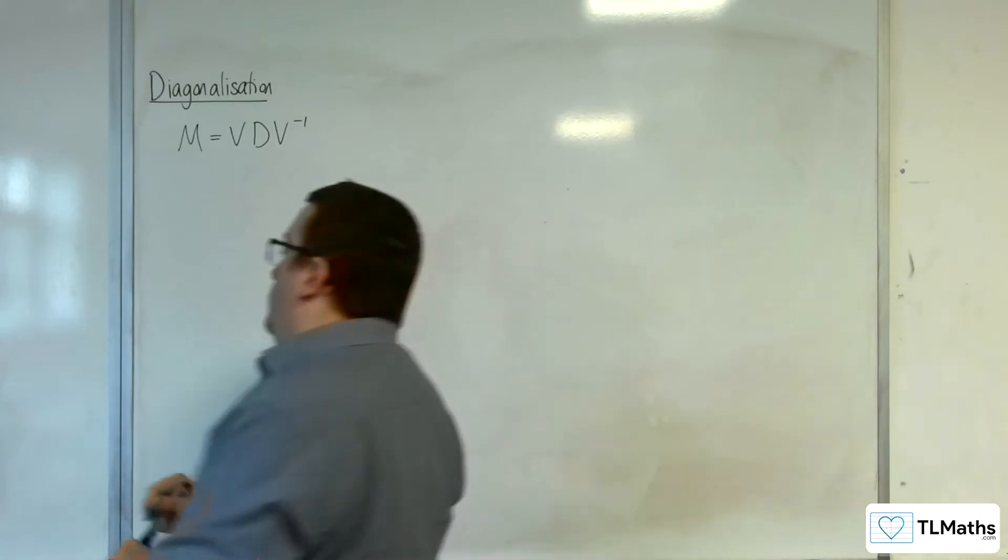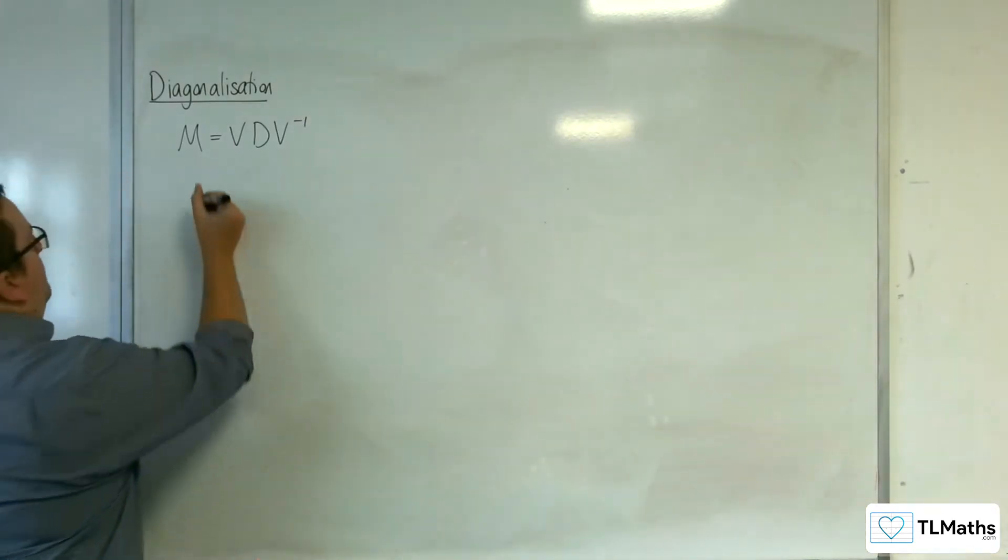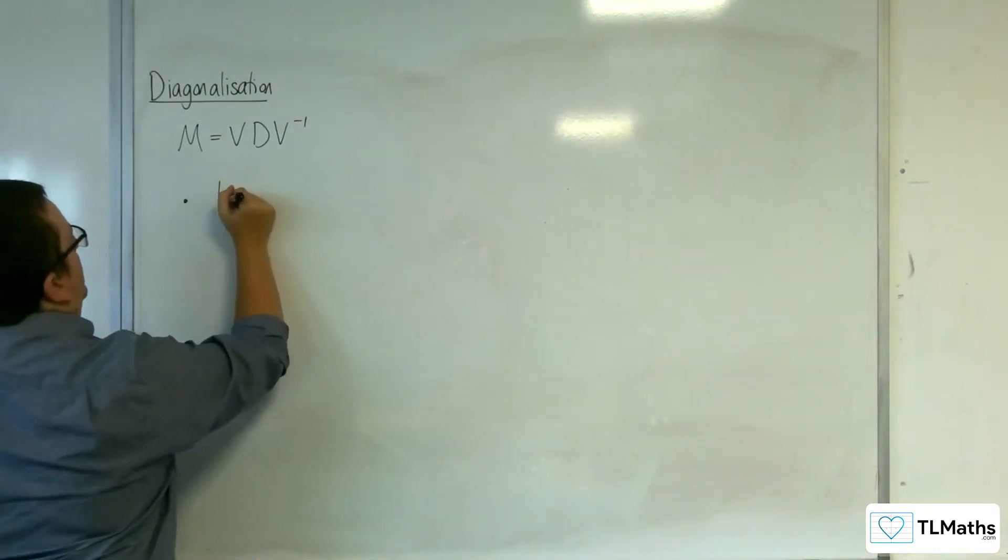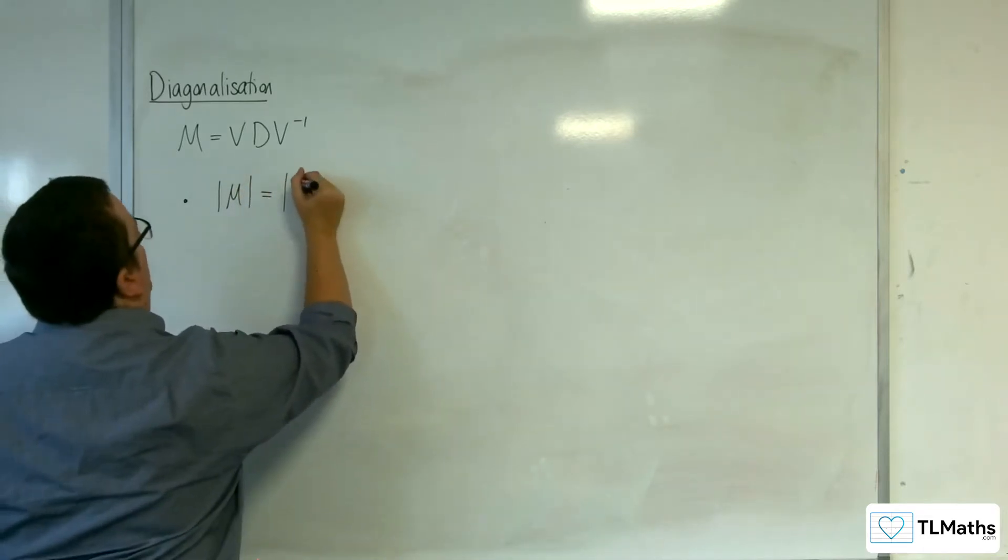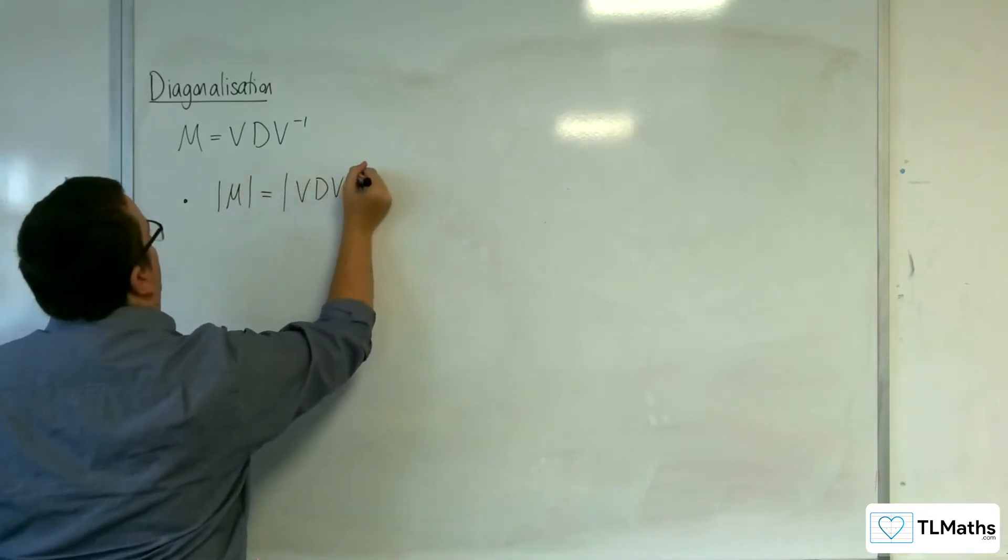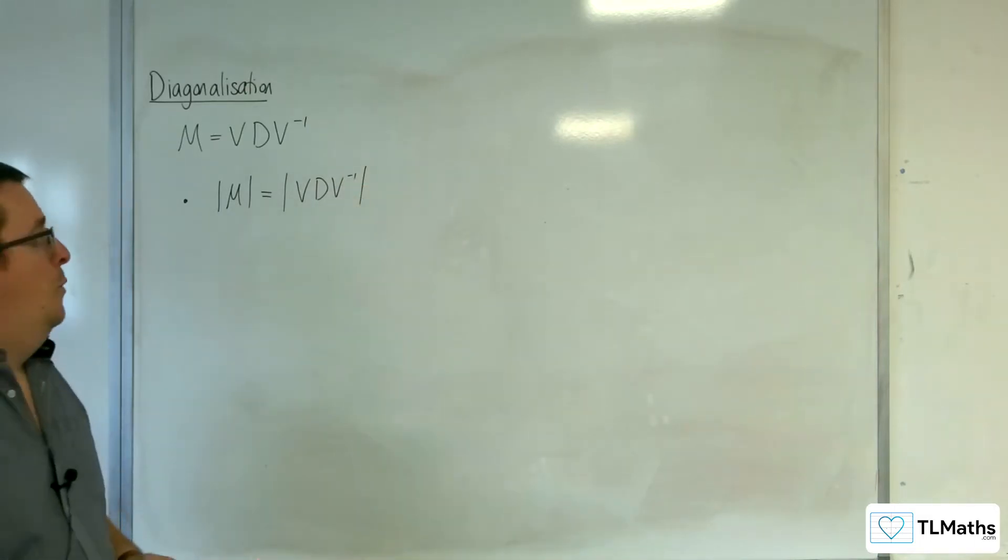So the first one is to do with the determinant of M. If we look at the determinant of M, then that is the determinant of V, D, V minus 1, in its diagonalised form.